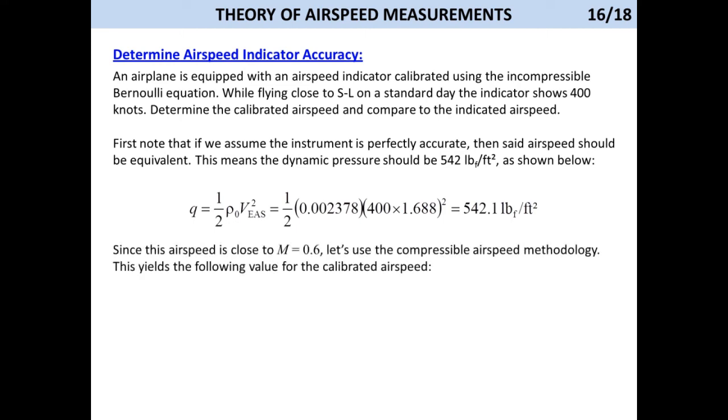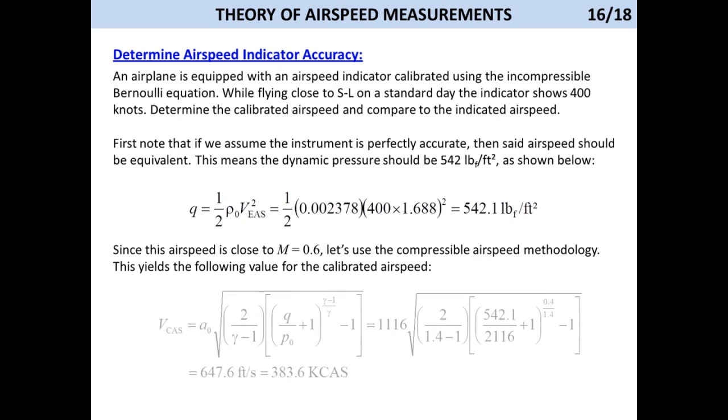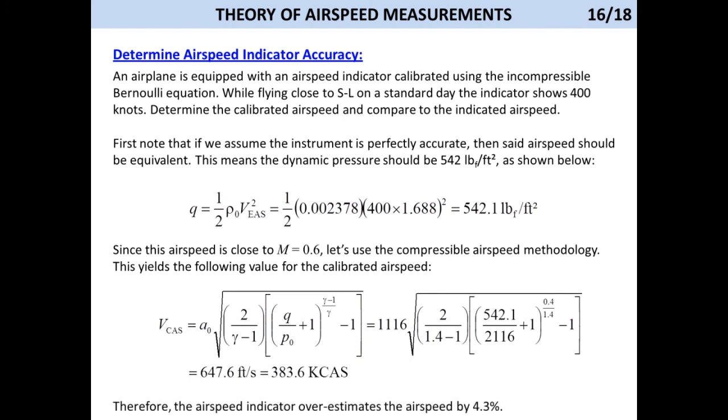Since this airspeed is close to Mach 0.6, let's use the compressible airspeed methodology. This yields the following value for the calibrated airspeed. Therefore, the airspeed indicator overestimates the airspeed by 4.3%. In other words, the airspeed indication system is telling us we are flying faster than we actually are.